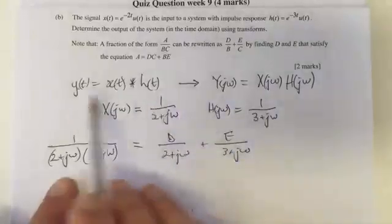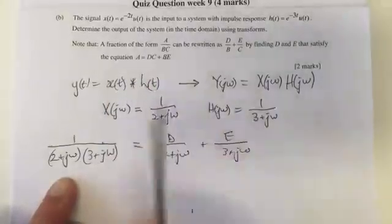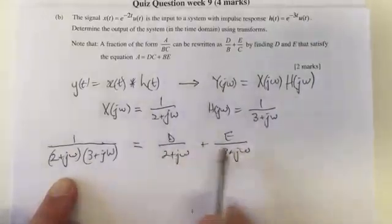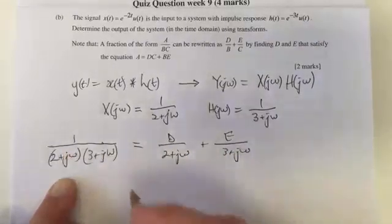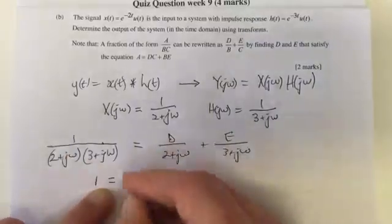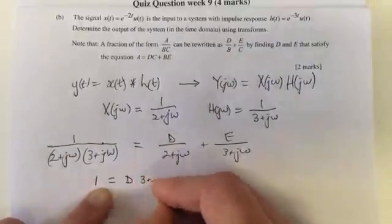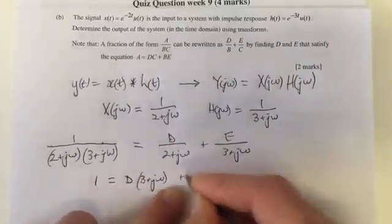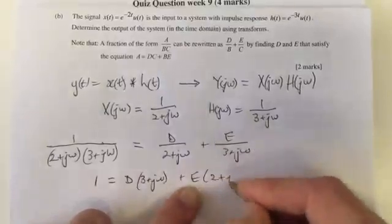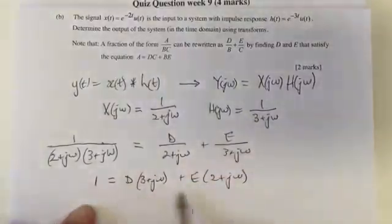We'll get D divided by 2 plus jω plus E divided by 3 plus jω. And then you can either work it out yourself or look at the formula. And you see that the numerator, if you were to put these two terms together to get to the left-hand side, the numerator 1 has to equal D times, you would be multiplying top and bottom by 3 plus jω. And then plus E, and you'd be multiplying the top and bottom of this by 2 plus jω. So there's a formula.